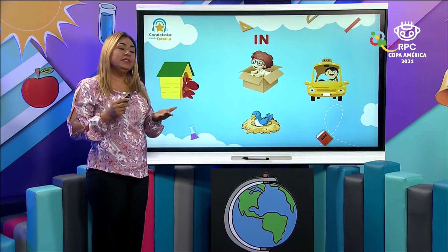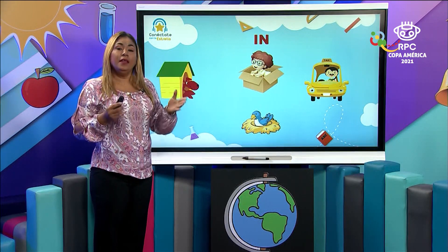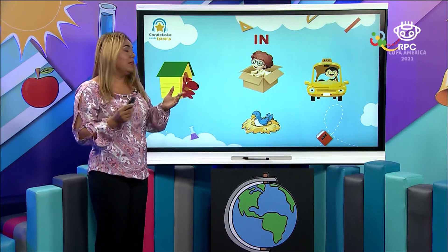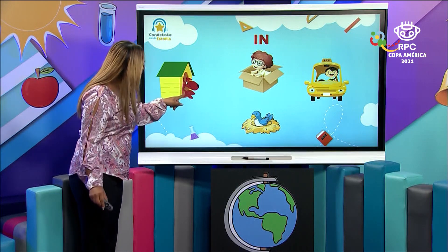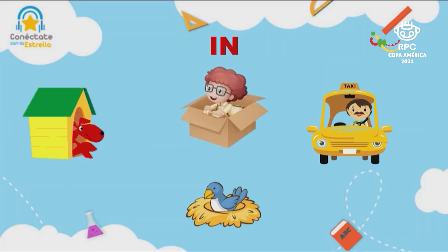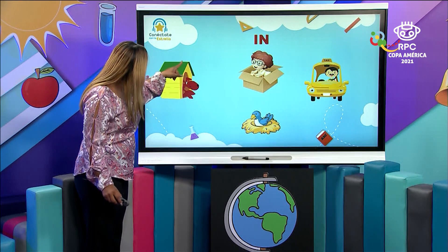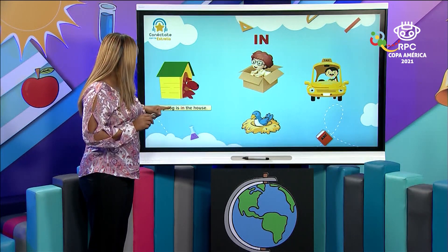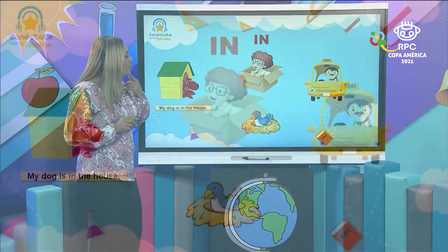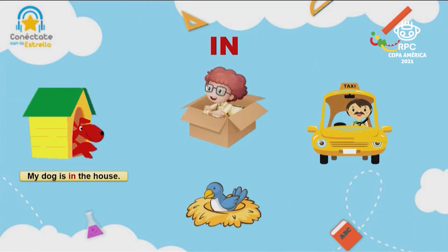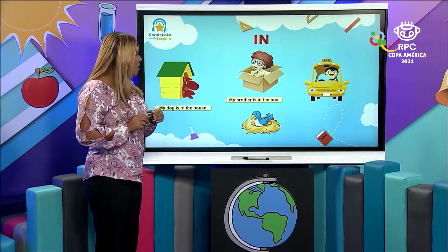Now we have to practice about the preposition "in". "In" indicates the position of something. This is a dog. This is a boy. This is a man and this is a bird. So where is the dog? The dog is in the house. My dog is in the house. Look at the boy — it could be a brother. Where is he? My brother is in the box. He is in the box.